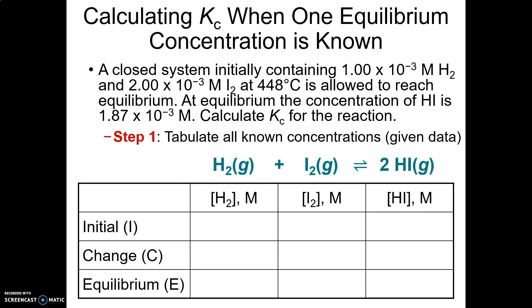I'll show you how to do this on paper too. Step one: tabulate everything you know. The initial concentration of H₂ is 1×10⁻³ M, I₂ is 2×10⁻³ M. For HI, they didn't give an initial concentration — if they don't give you an initial concentration, you assume it's zero. We know all three initial concentrations. And we know the equilibrium concentration of HI is 1.87×10⁻³ M. So we plug in what we know.